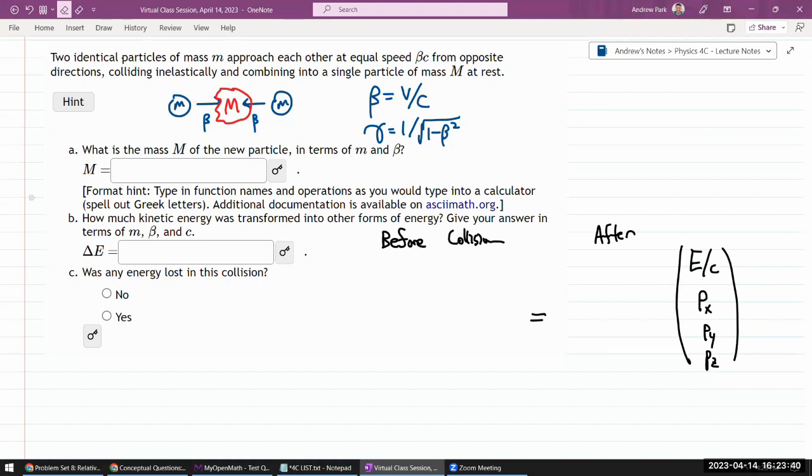So before collision, I have two energy momentum 4 vectors, one for particle 1 and one for particle 2. So I will write the energy in terms of gamma. So these are the formulas that you should know, could have memorized. Relativistic momentum is given by gamma and V, or in terms of the symbols I'm using, gamma and beta C. And relativistic energy is given by gamma MC squared.